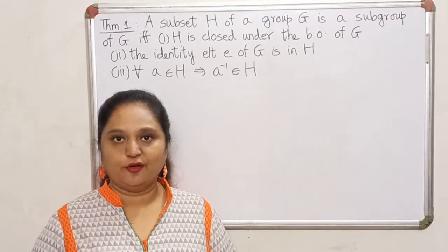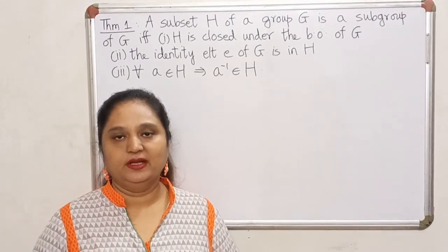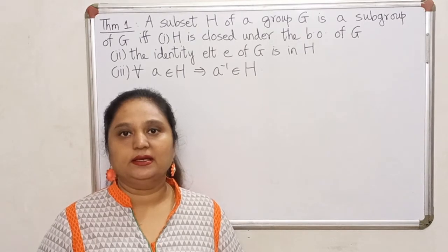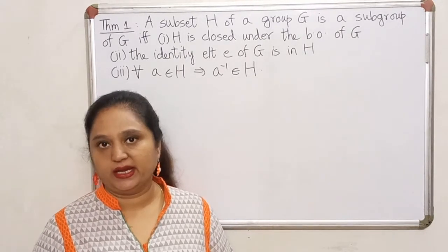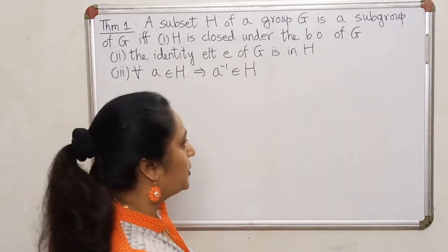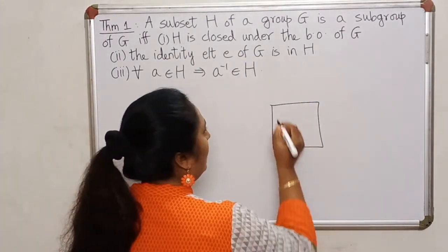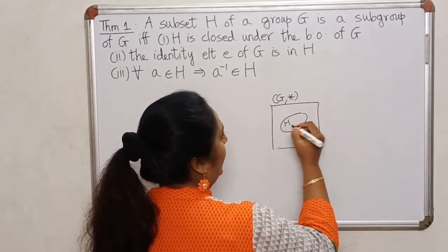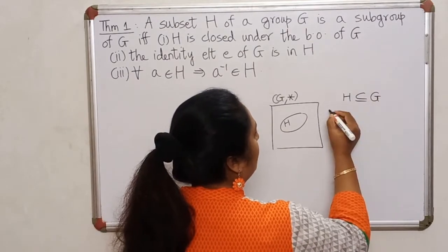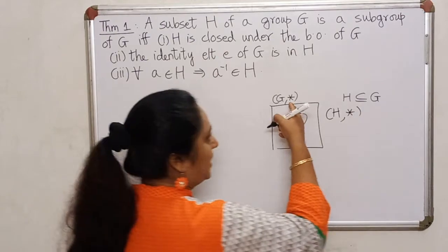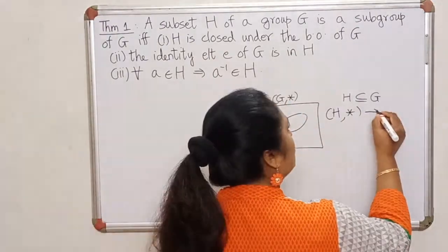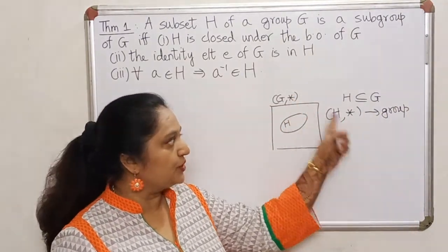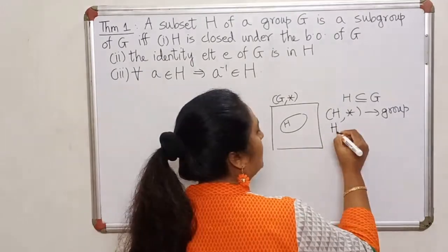Hello everyone. So far in this chapter we have seen the definition of a subgroup, and in the last lecture we also saw that two of the five properties of a binary operation are inherited. So let's quickly recall: if I have a group G with respect to a binary operation star, and H happens to be a subset of G such that with respect to the same operation it also becomes a group on its own, then we say that H is a subgroup of G.